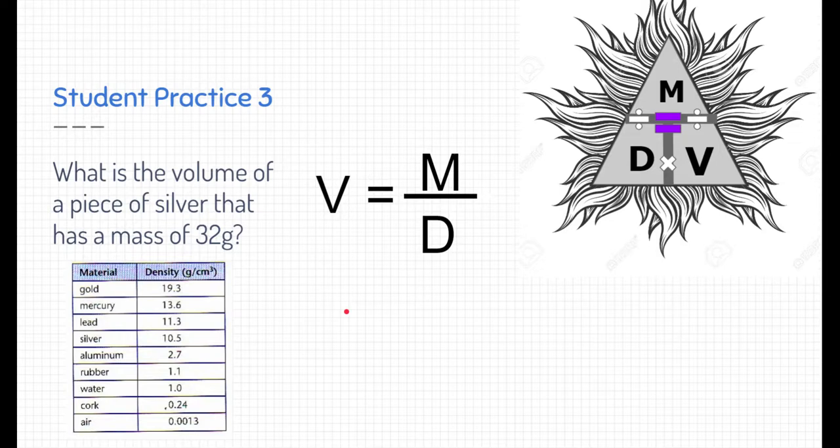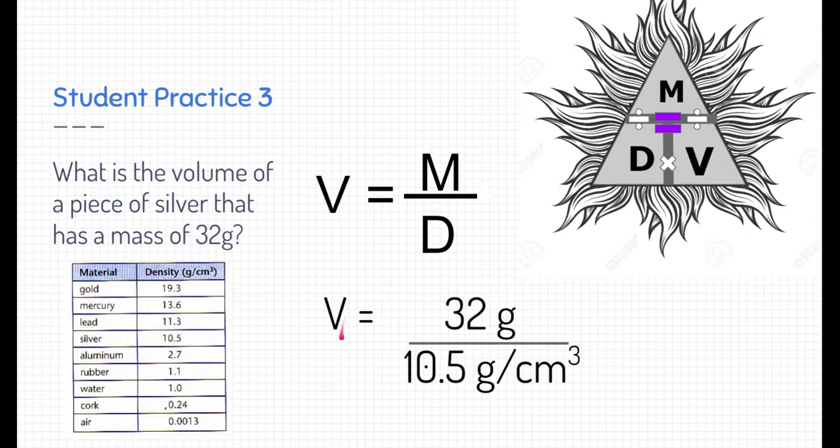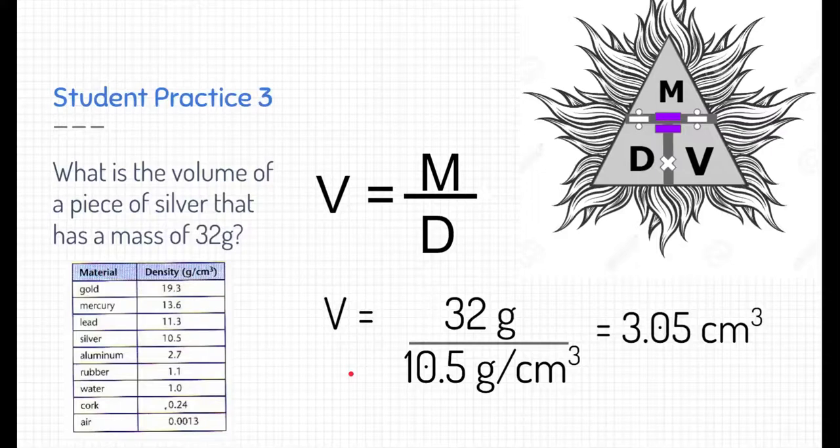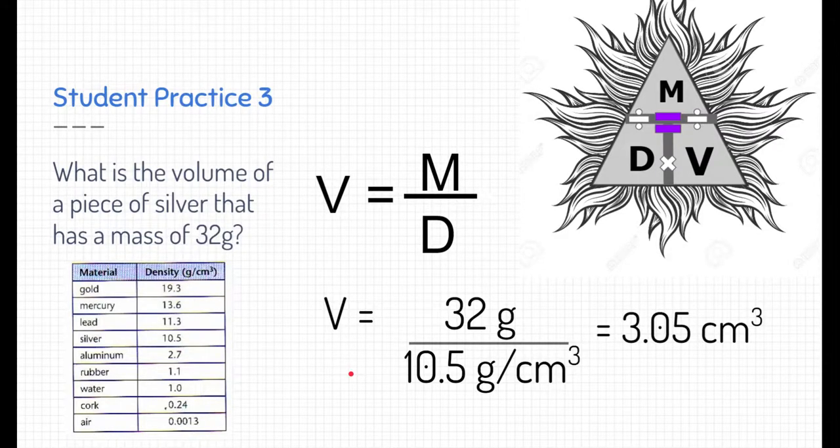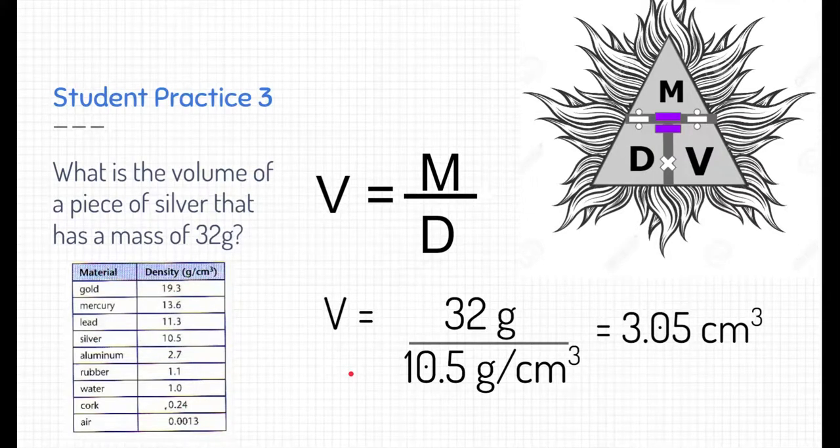So we're looking at silver specifically. Silver is 10.5 grams per cubic centimeters, which is the density. So I'm going to go ahead and put those two values in here, 32 grams divided by 10.5 grams per cubic centimeters, which is the unit of density. If I plug that out in a calculator, I'm going to figure out that the density is 3.05 cubic centimeters. That's the volume, not the density.